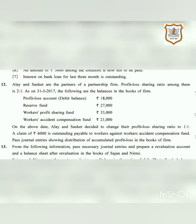Hello dear students, welcome back. In the last video we learned how to prepare revaluation account. In this session we will be learning accounting treatment of accumulated profits and reserves. Let's do question number 12 from your textbook on page number 141. Ale and Sanket are partners of a partnership firm. Their profit and loss sharing ratio is 2:1. As on 31st March 2017, the following balances are in the books of the firm: Profit and Loss account (debit balance) ₹18,000, Reserve Fund ₹27,000.